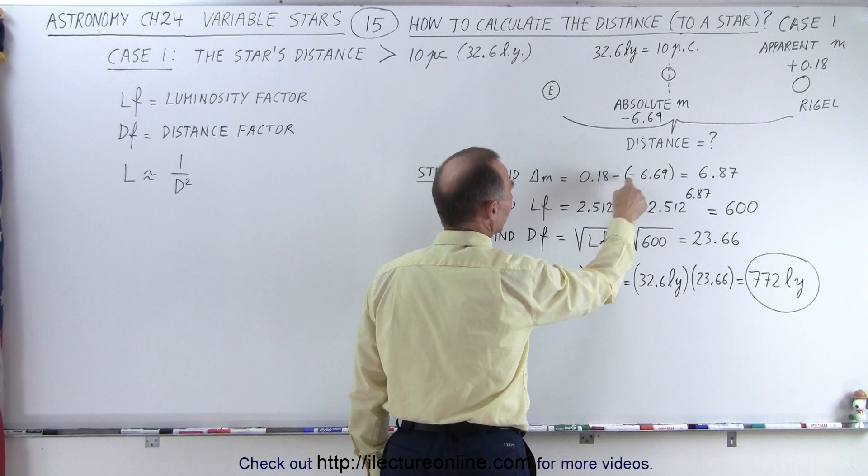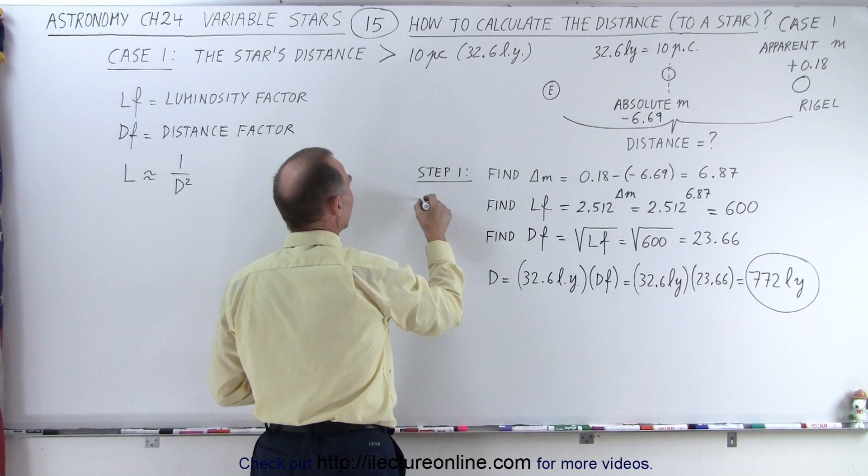Step 1, you find the difference in the magnitudes. You take the dimmer magnitude and subtract the brighter magnitude. So the difference between the two is 6.87.